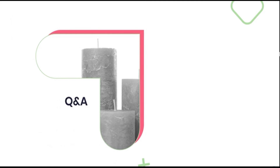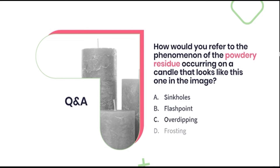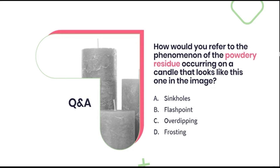Let's see how much you are remembering with a multiple choice question. How would you refer to the phenomenon of the powdery residue occurring on a candle? Would it be A, sinkholes; B, the flashpoint; C, over dipping; or D, frosting? The correct answer is D, frosting — a very common phenomenon in soy and paraffin wax candles.